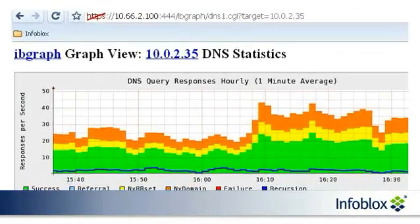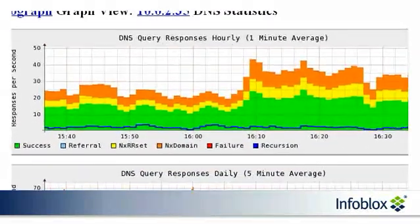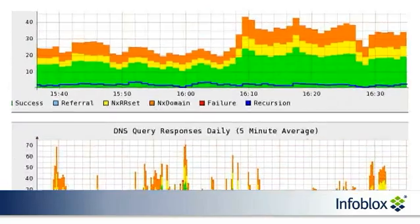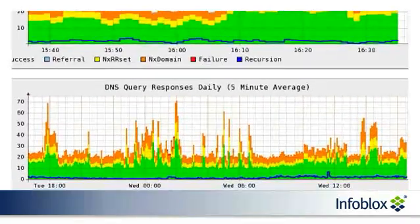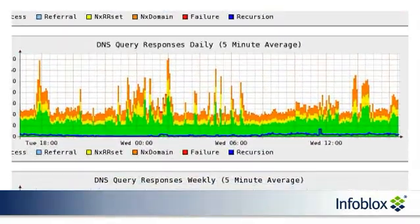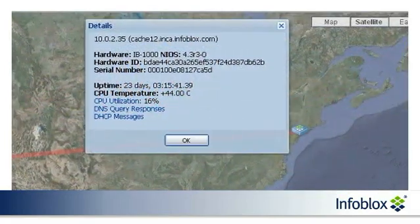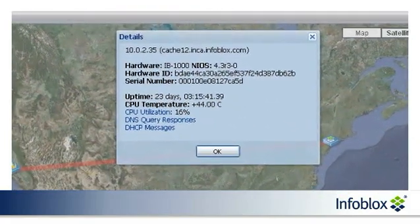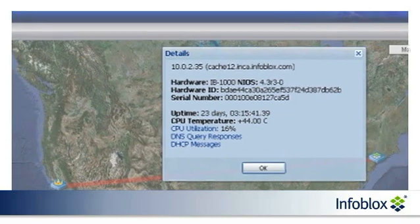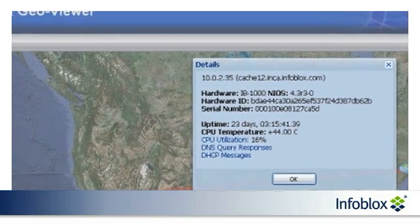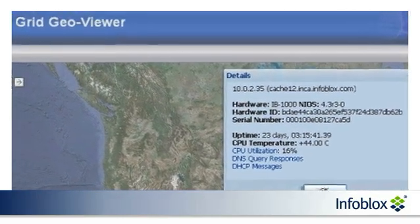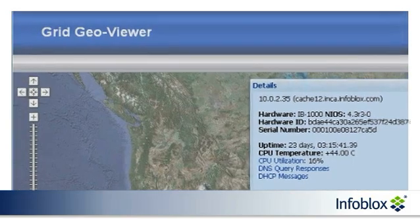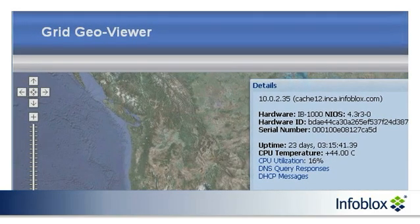Another free snap-in is an SNMP statistics viewer we call IBGraph. Using IBGraph, you can graphically monitor your statistics such as network utilization. Yet another free snap-in is the network operating center utility we call the Grid GeoViewer. Using the Grid GeoViewer, you can quickly assess the status of your grid of Infoblox appliances graphically and intuitively.